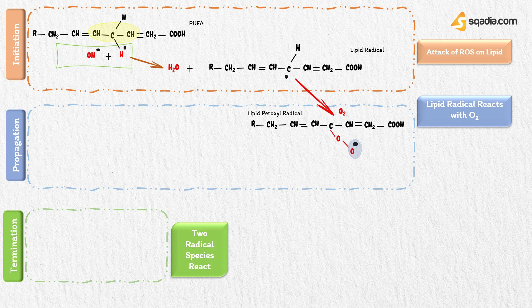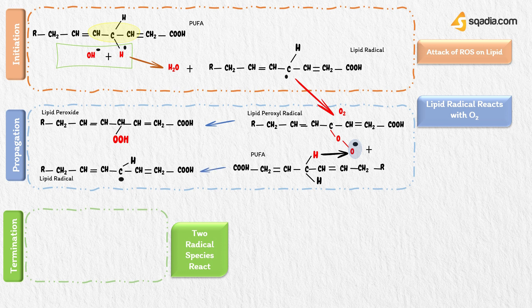Then this lipid peroxyl radical reacts with another polyunsaturated fatty acid. One of the hydrogens of the methylene bridge will transfer to lipid peroxyl radical. So, there will be generation of lipid peroxide, and polyunsaturated fatty acid is converted to lipid radical, as generated in the initiation step.